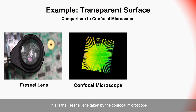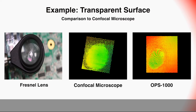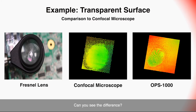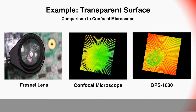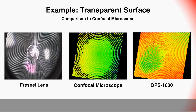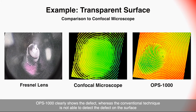This is the Fresnel lens image taken by the confocal microscope. Now let's look at the image taken by Santec's OPS-1000. Let's zoom in on the area with the defect. OPS-1000 clearly shows the defect, whereas the conventional technique is not able to detect the defect on the surface.